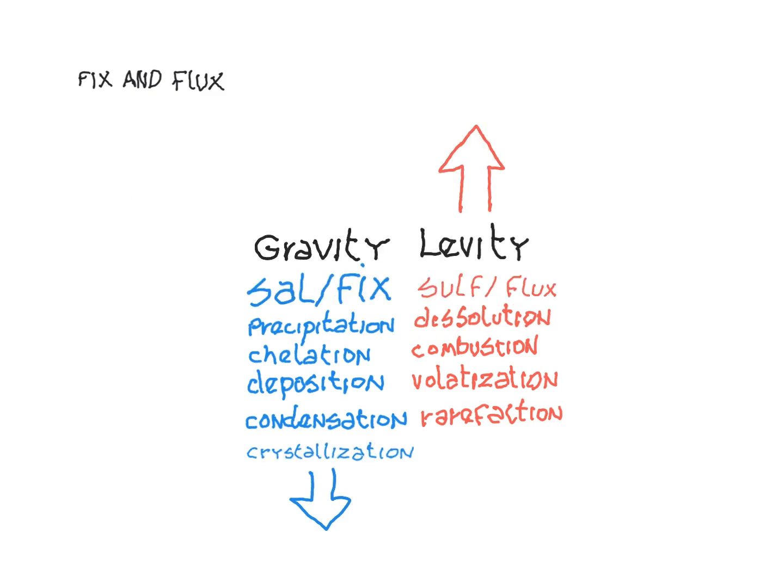Sal-fix in the pole of gravity is known by many names: precipitation, chelation, deposition, condensation, crystallization. Sulf-flux in the pole of levity is also known by many names: dissolution, combustion, volatilization, rarefaction.